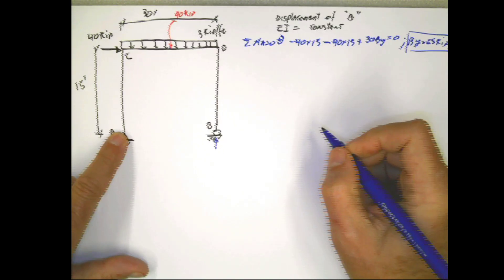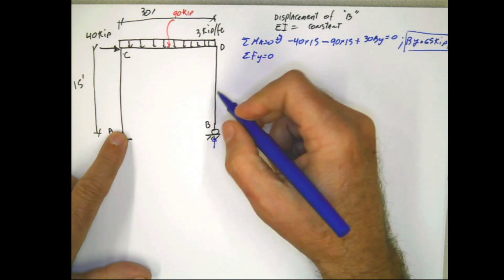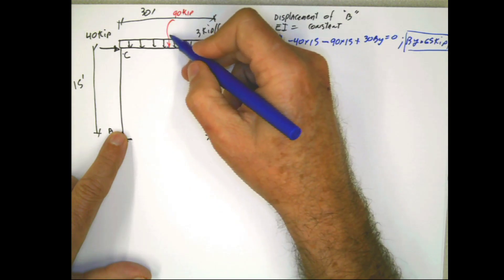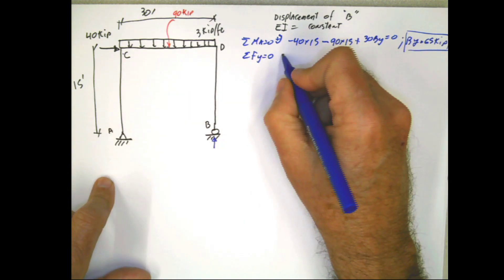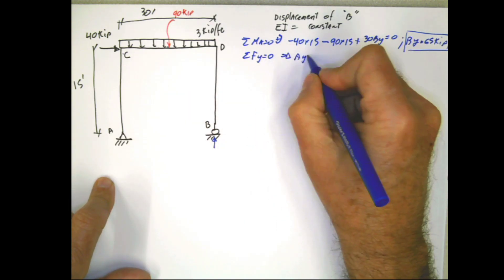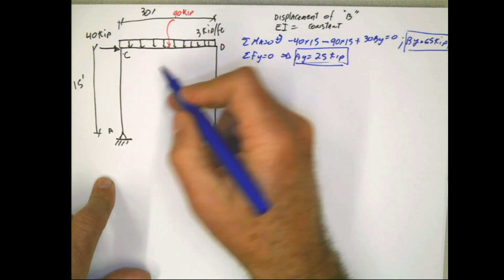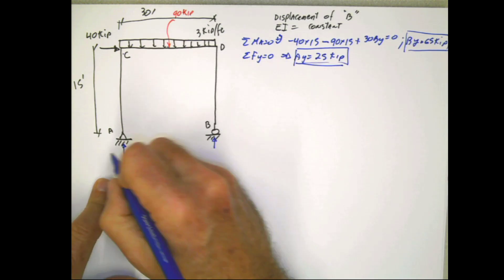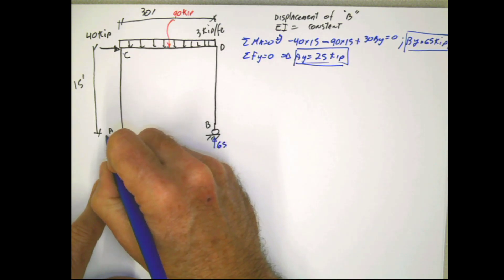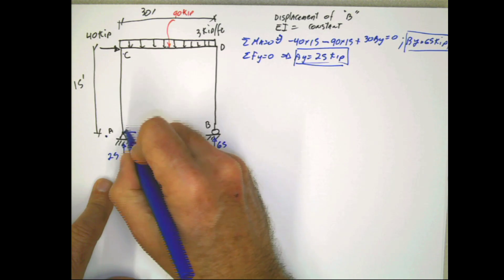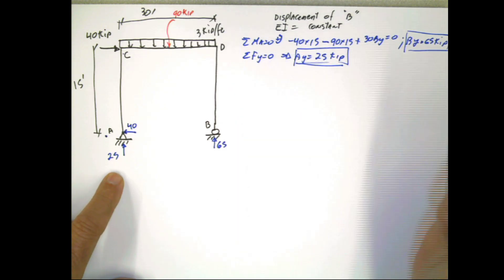Then you do summation of forces in y equals zero. You have 90 in one direction and 65 in the other, so Ay equals 25 kip. And summation of forces in x equals zero — you also have a force of 40 acting in that direction. So that will be the real structure.